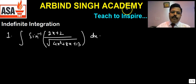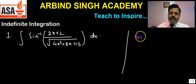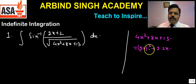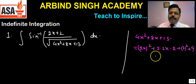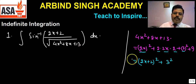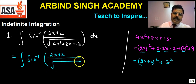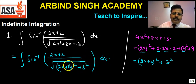We have 2x+2 in the numerator. Let us think about 4x²+8x+13. We can write this as (2x)² + 2·(2x)·2 + 2² + 9, which becomes (2x+2)² + 9, i.e., (2x+2)² + 3². So the integrand becomes sin⁻¹((2x+2) / √((2x+2)² + 3²)). Yes, this is correct — we have converted it into this form.